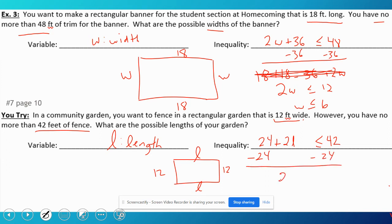So I subtract 24, divide by 2. The length would have to be less than or equal to 9. That's kind of weird—the length is less than the width—but it doesn't really matter which one is which.